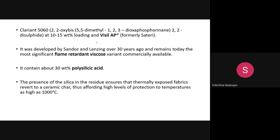Clariant 5060 is based on the chemistry of 2,2'-oxybis(5,5-dimethyl-1,2,3-dioxaphosphorinane). Its commercial name is Vizel AP. In this chemistry, you will definitely find phosphorus, metal salt, chlorine, or bromine. Nowadays, because of environmental awareness and legislation, people are trying to replace halogen-based chemistry. Vizel AP is a flame retardant chemical for viscose rayon developed by Sandoz and Lenzing — a very popular company — about 30 years ago.